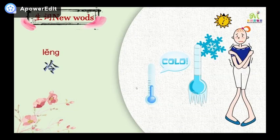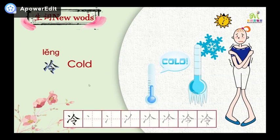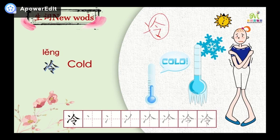Okay, next word. Look at the picture. Can you understand its meaning? 冷 — its meaning is cold. So how to write 冷? Follow me. 冷：一，二，三，四，五，六，七. The right part looks like 金, but it's not 金 — there's another dot here. 冷, pronunciation: 冷.